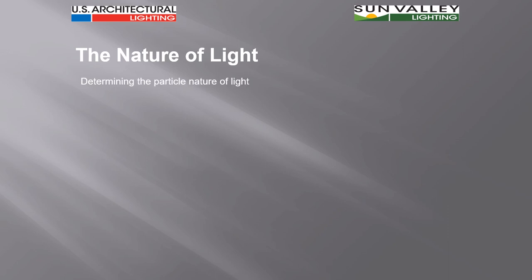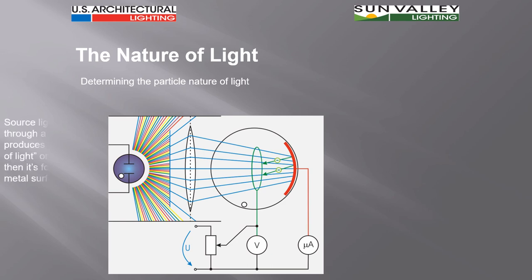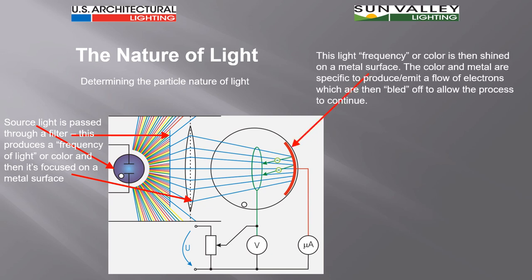In determining the particle nature of light, there were experiments that were done in the late 19th and early 20th century. One of the processes was to take a source of light and pass it through a filter in order to narrow down the frequency of light or color. Frequency of light and color are essentially the same thing, and then focus it onto a metal surface.